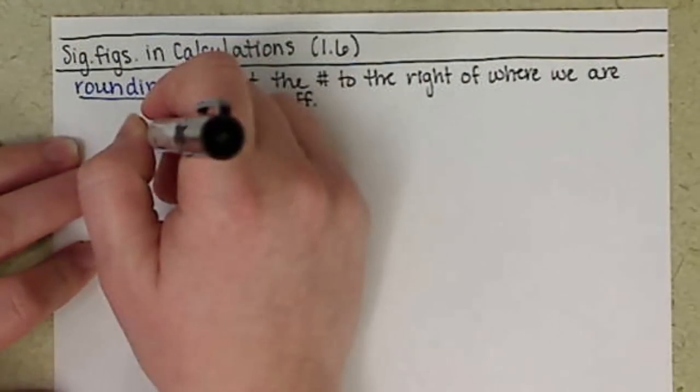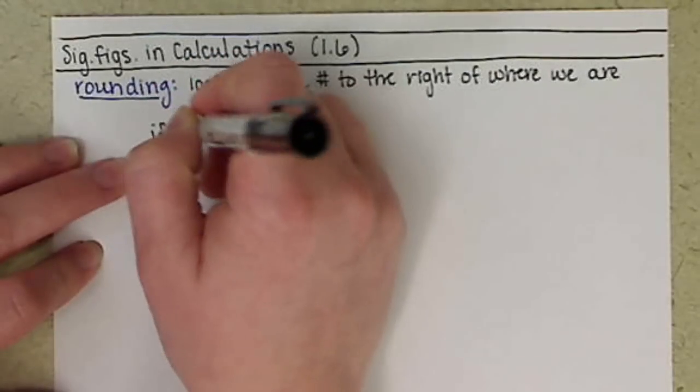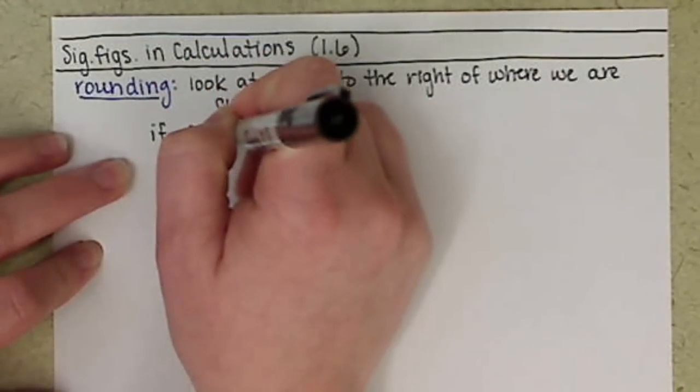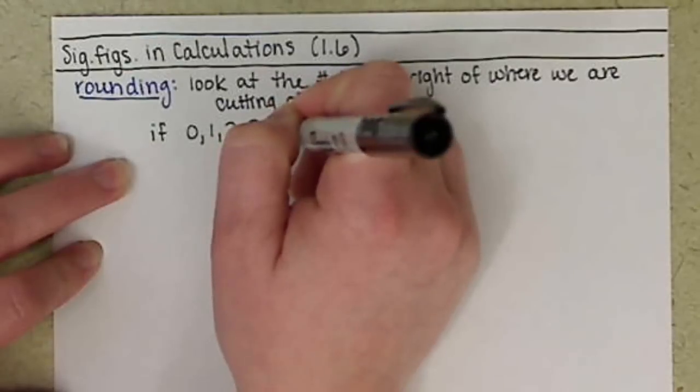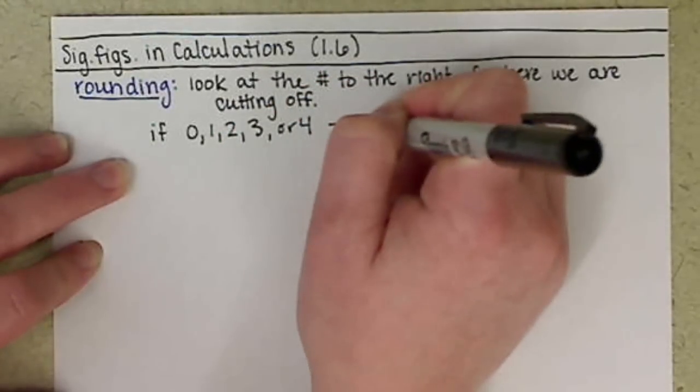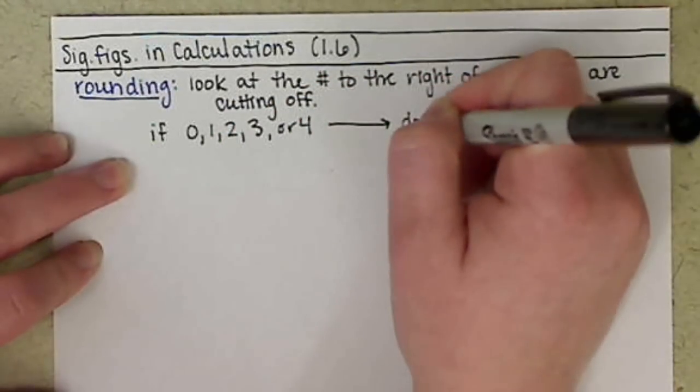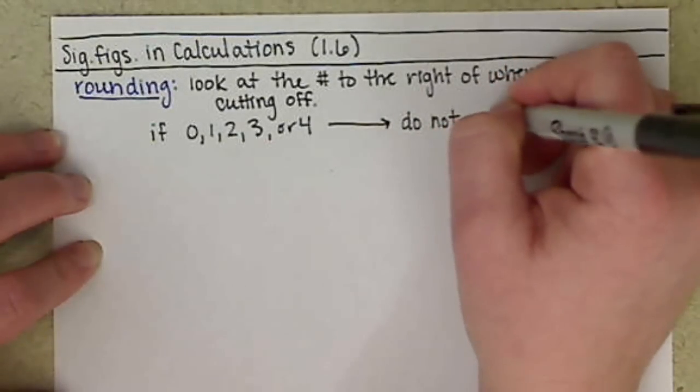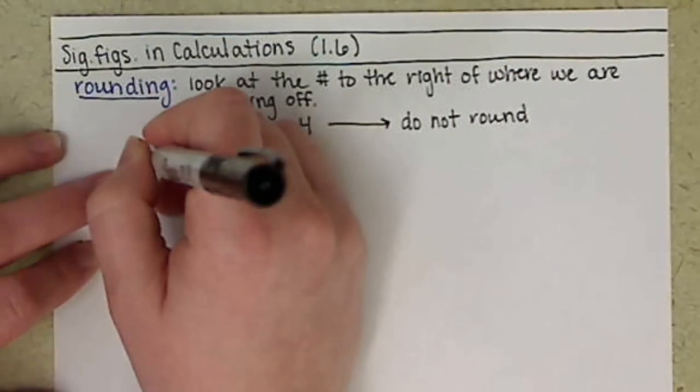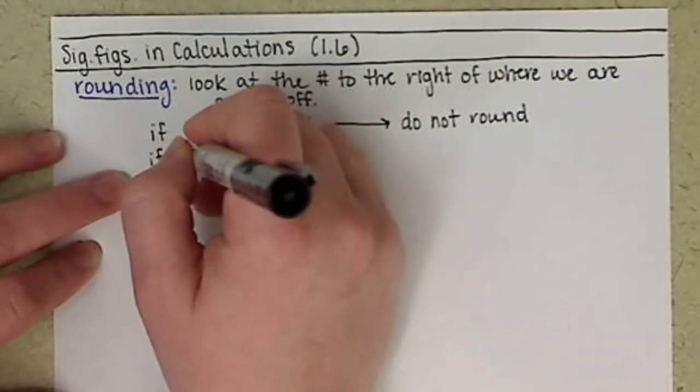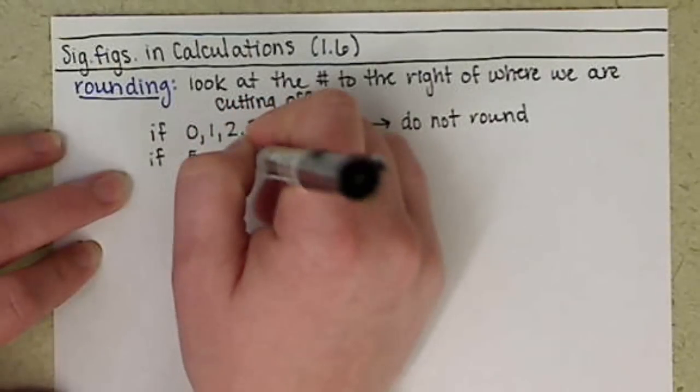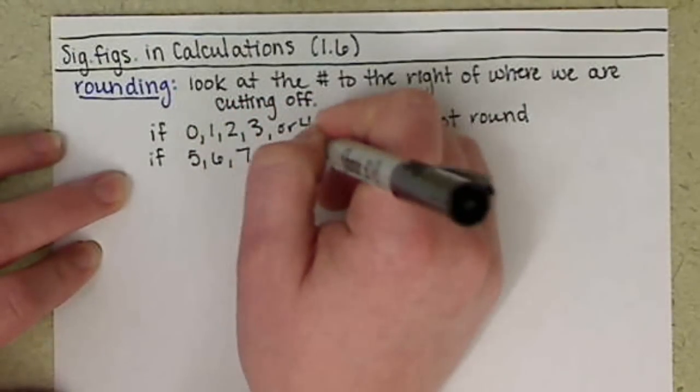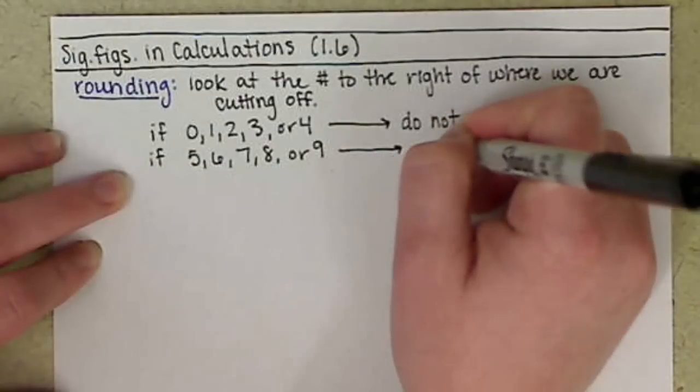Basically, if we look to the right and if that number is 0, 1, 2, 3, or 4, we aren't going to round the number that we're cutting off at. So do not round. If that number is 5, 6, 7, 8, or 9, we want to round up.